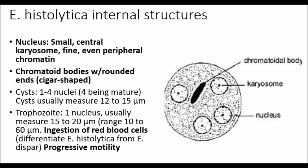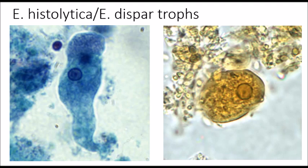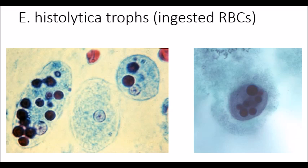The trophozoites of E. histolytica have a progressive motility. In these pictures you can see E. histolytica and E. dispar cysts, with arrows pointing at the nuclei and chromatoid bars — but based on morphology alone you cannot differentiate the two. Here we have the E. histolytica and E. dispar trophs, again with a single nucleus — and again you cannot differentiate between the two species. However, when you see the ingested RBCs within these trophozoites, you can identify this as Entamoeba histolytica.